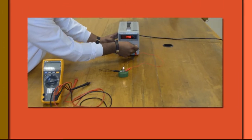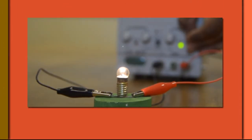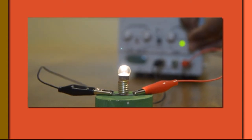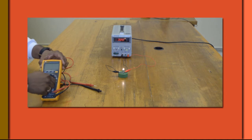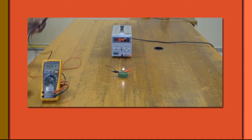Observen lo que sucede con la intensidad de la luz emitida a medida que aumenta la diferencia de potencia o voltaje. Medimos la corriente eléctrica y la diferencia de potencial con el multímetro.